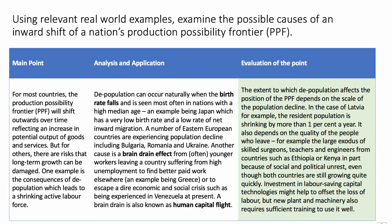The evaluation point: the extent to which depopulation impacts the PPF depends on the scale of the population decline — and 'depends on' is a great evaluation phrase to use. Latvia, for example, has a population shrinking by more than one percent per year, which is significant over a decade or more. It also depends on the quality of the people who leave. If Kenya or Ethiopia suffer a brain drain of skilled surgeons, engineers, and teachers, that's clearly a major problem for future growth. However, if countries are suffering a brain drain, that might stimulate labour-saving capital investment and new technologies which could in part offset the loss of labour.